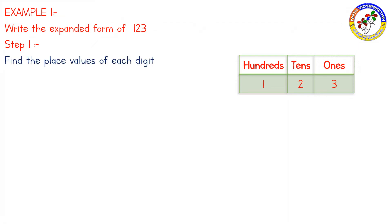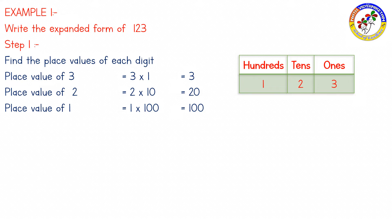Step 1: Find the place values of each digit. Place value of 3 is 3 into 1, which is 3. Place value of 2 is 2 into 10, which is 20. Place value of 1 is 1 into 100, which is 100.